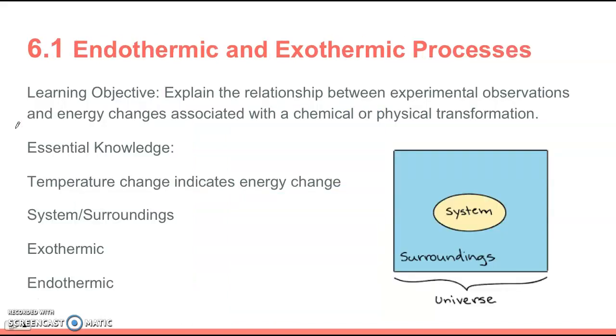Section 6.1 is on endothermic and exothermic processes. The learning objective is to explain the relationship between experimental observations and energy changes associated with a chemical or physical transformation. The essential knowledge for this section: first, if there's a temperature change for an object, that means its energy has changed.